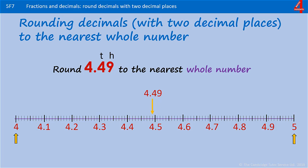The whole numbers either side are 4 and 5. But this time the arrow hasn't quite got to the halfway mark. So 4.49 rounded to the nearest whole number, it's nearer to 4 than it is to 5.